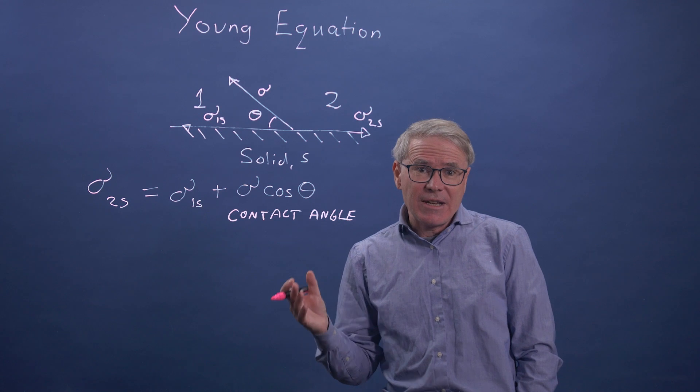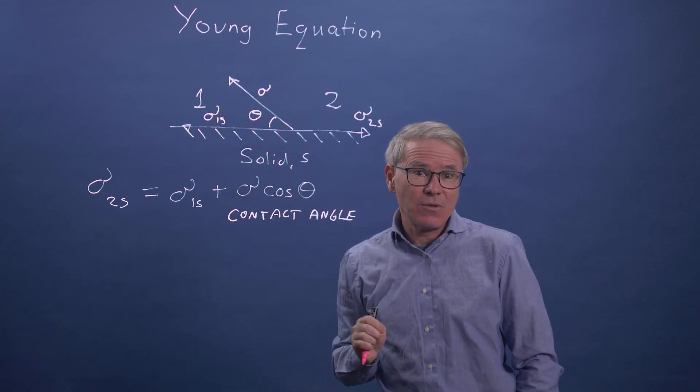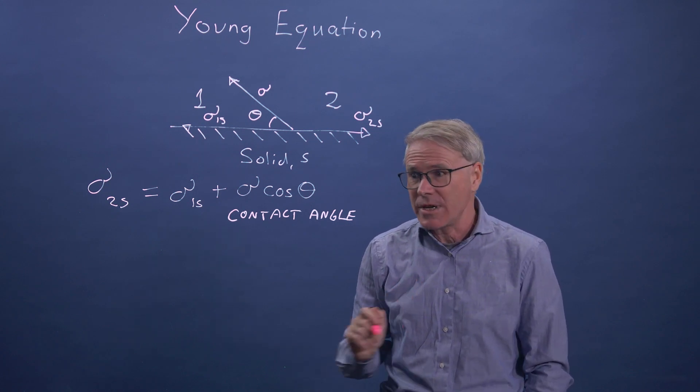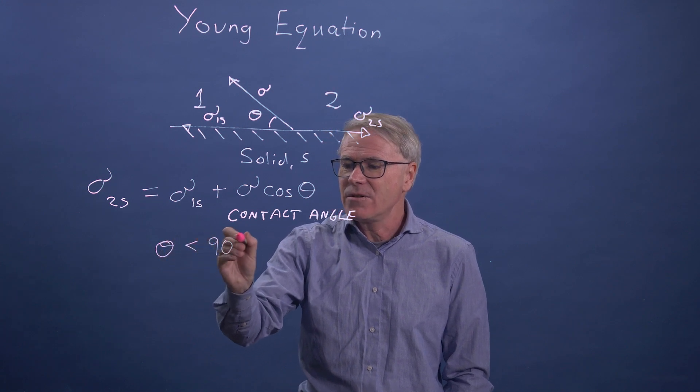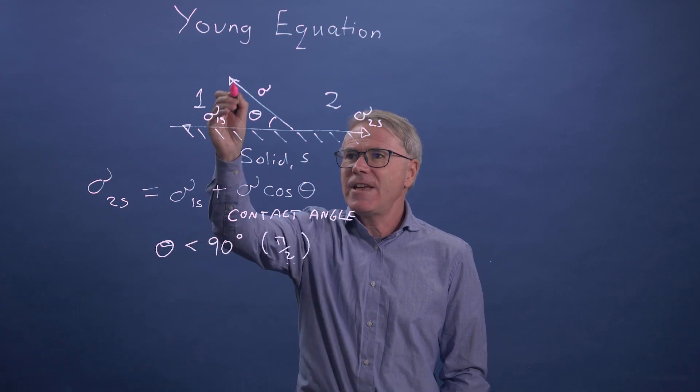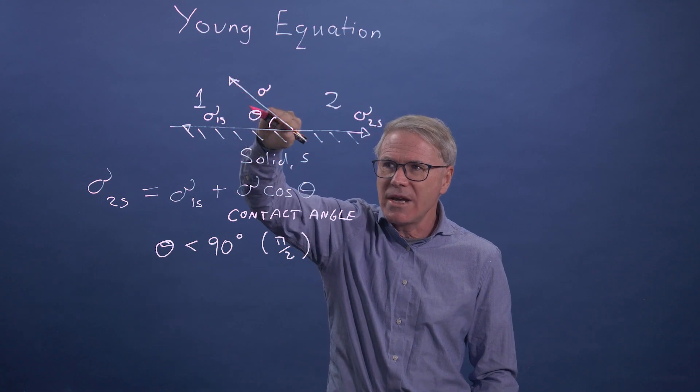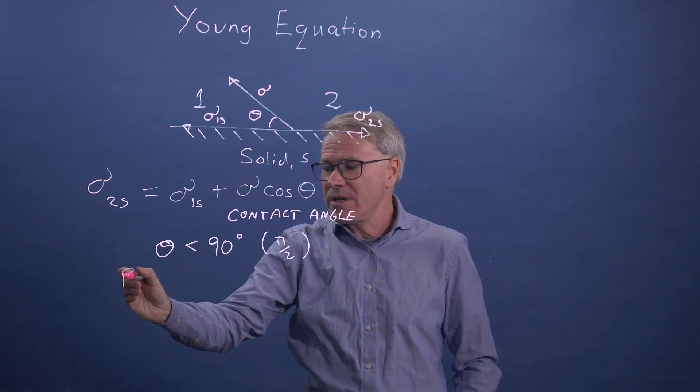Often you see derivations where this is called a wetting phase and this is called a non-wetting phase, but we don't need to make any assumptions about the contact angle. Generally speaking, if this contact angle is less than 90 degrees or in radians pi over two, then phase one likes the surface. You see that phase one is attempting to cover the surface. So phase one is wetting.